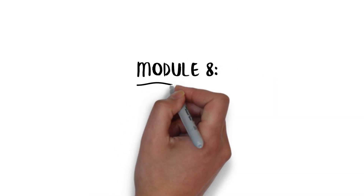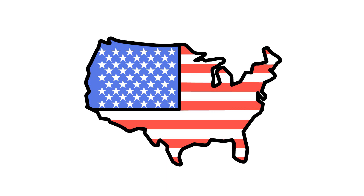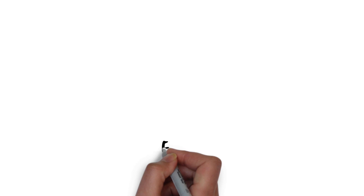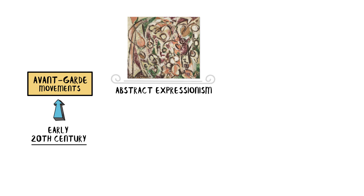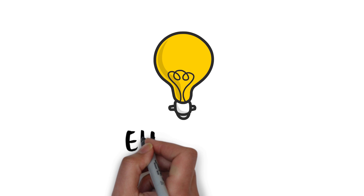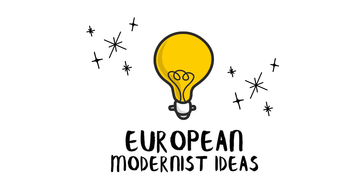Module 8: Modern Art. Modern art in the United States during this period was characterized by a diverse range of artistic styles and movements. The early 20th century saw the emergence of various avant-garde movements such as abstract expressionism, cubism, Dadaism, and surrealism. Artists in the United States were influenced by European modernist ideas, but they also developed their own unique approaches.